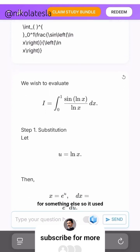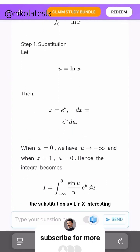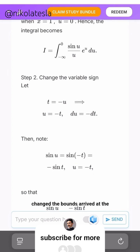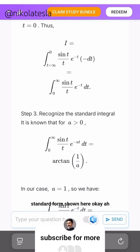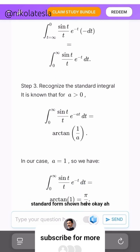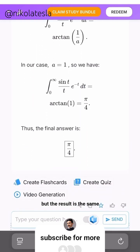So it used the substitution u equals ln x, interesting. Changed the bounds, arrived at the standard form shown here. But the result is the same: π over 4, interesting.